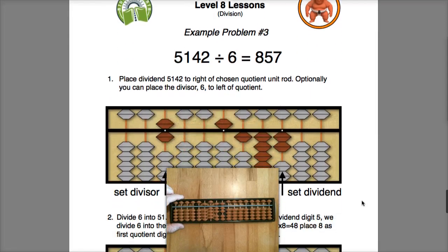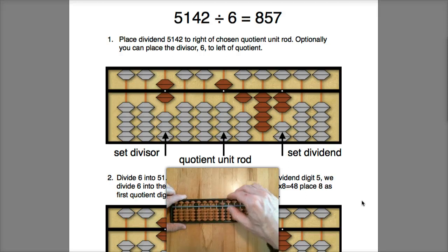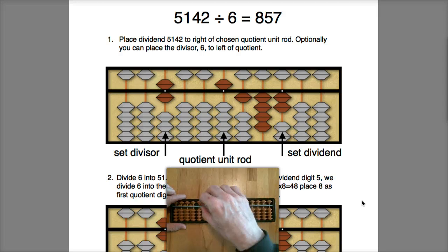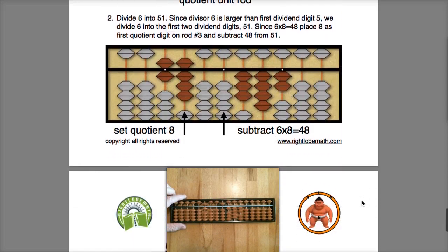All right, well let's go ahead and take a look at one final example here. And this time we'll do 5,142 and we'll be dividing it by 6. Okay, well the first thing we need to do is compare the 6 to the 5. So 6 is larger than 5, so we'll take 6 into 51.